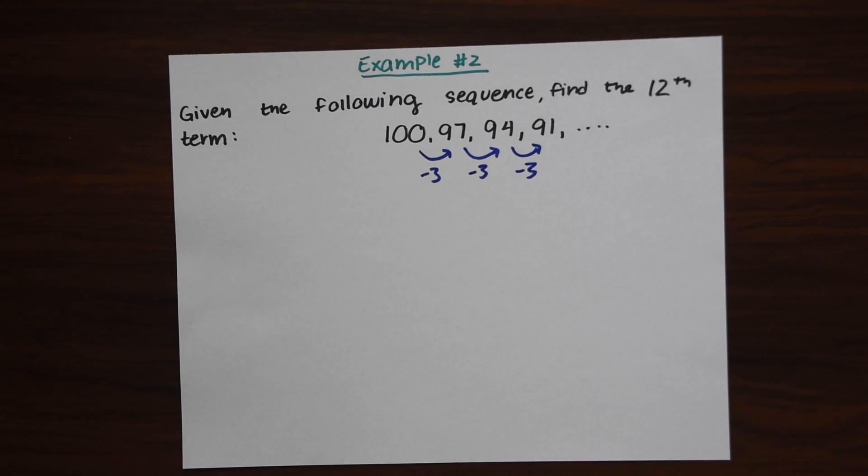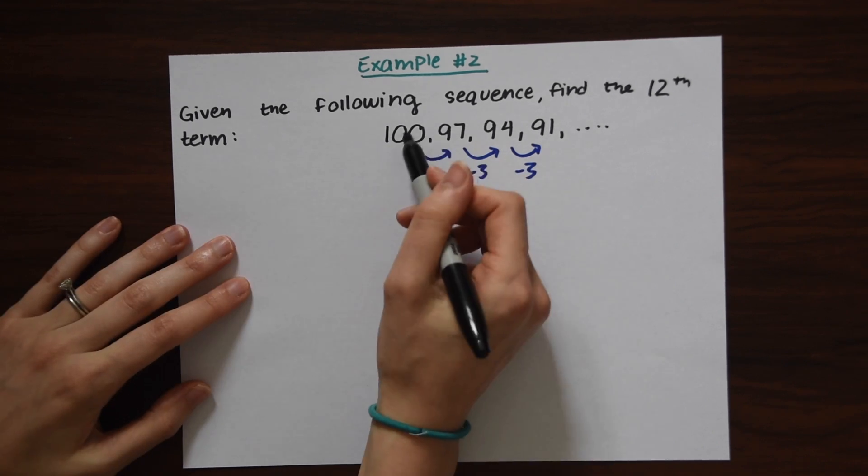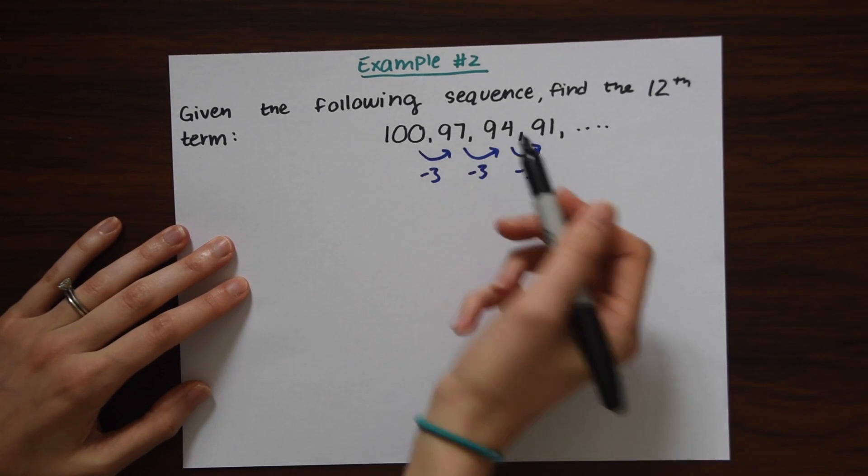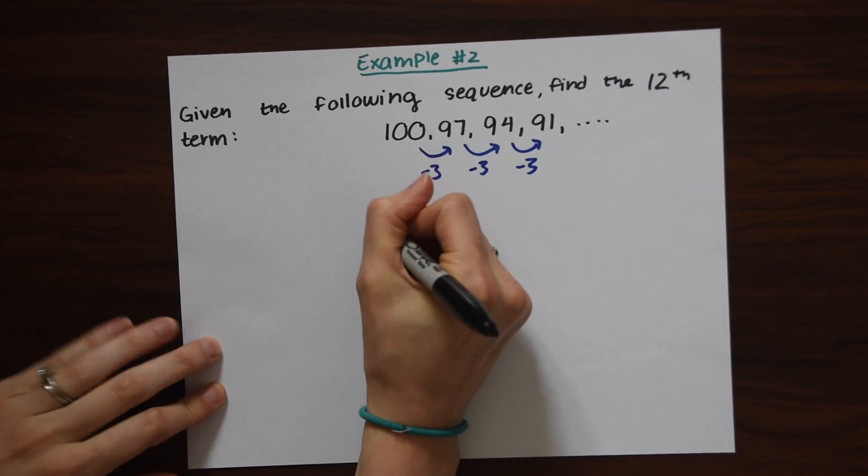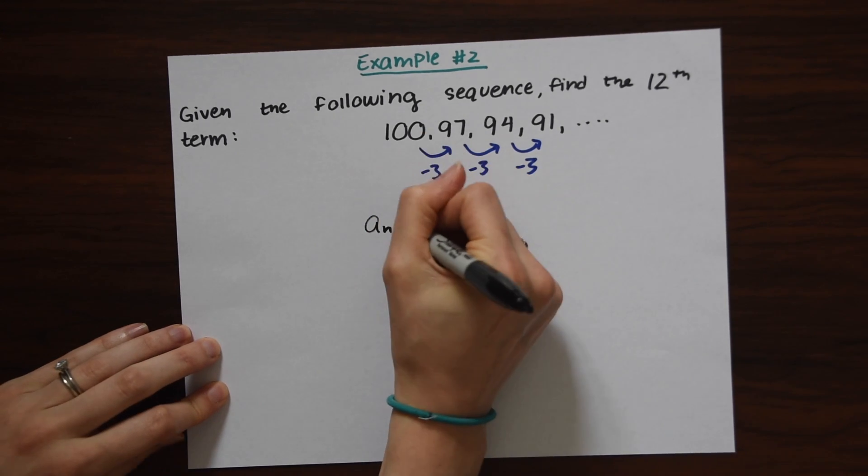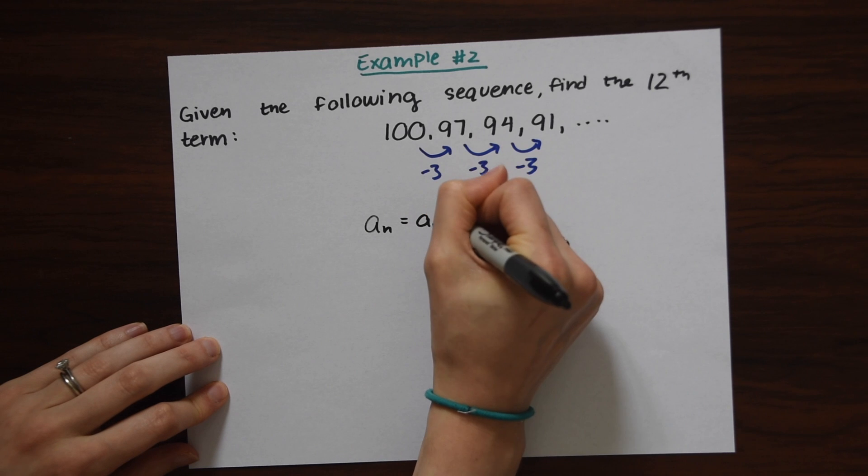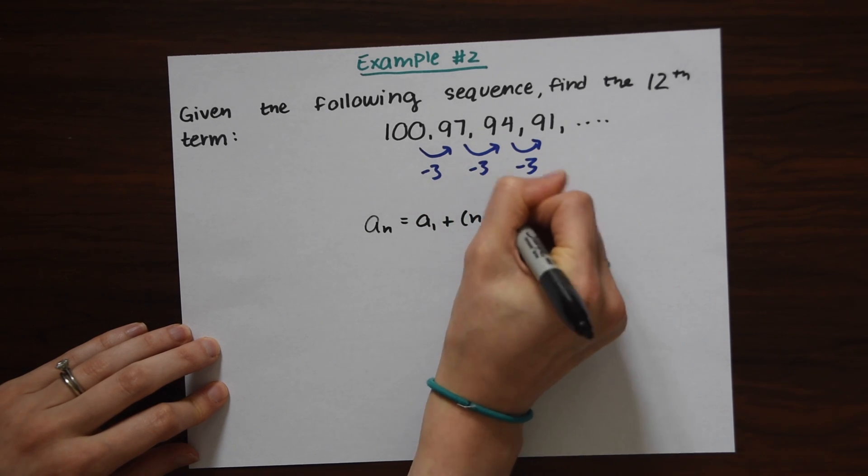So we want to find the 12th term. So this time we could actually find out doing it the long way. This is our first term. 1, 2, 3, 4. We have 4. We could do 12 terms, but let's use the formula because we want to really practice that. So let's write out the formula. A sub N equals A sub 1 plus N minus 1 times D.